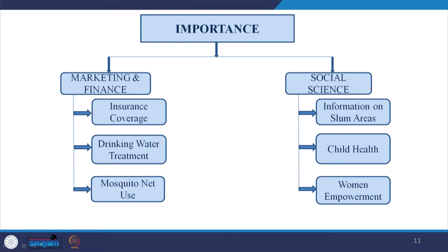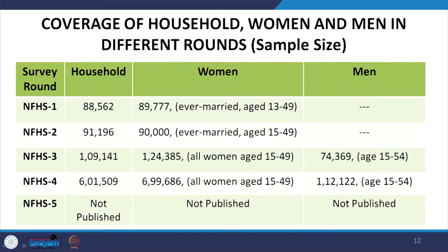So far as social science is concerned, you should not look at it in isolation — there are relationships between these domains. Broadly, you can derive information on slum areas, child health, and women empowerment. Sociologists and anthropologists are also highly interested in observing this information carefully. Let us have a look further at the coverage of this database in terms of men and women composition or sample size in different rounds. NFHS-4 dataset is downloadable and freely available to the public.